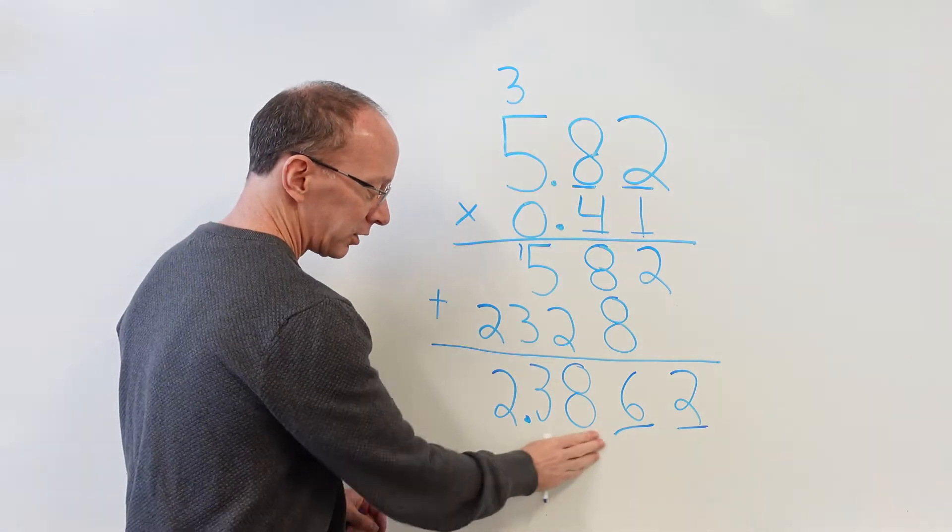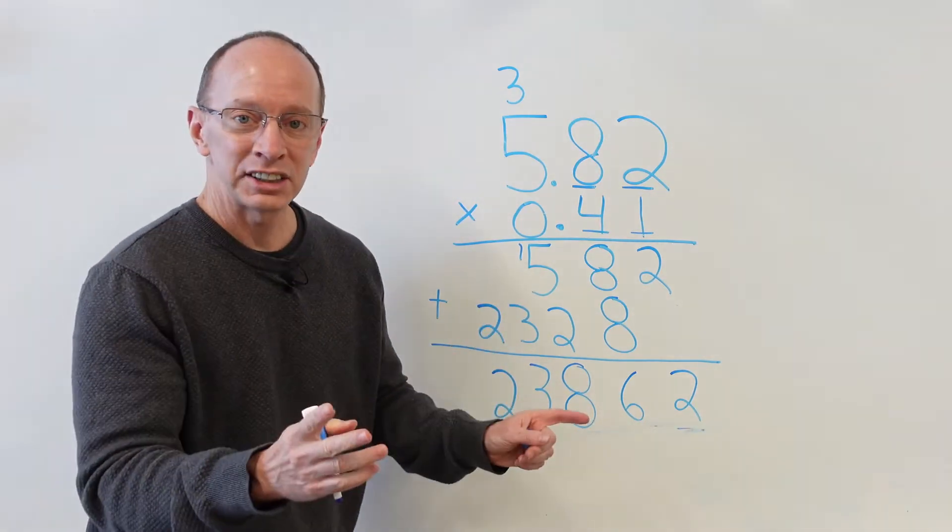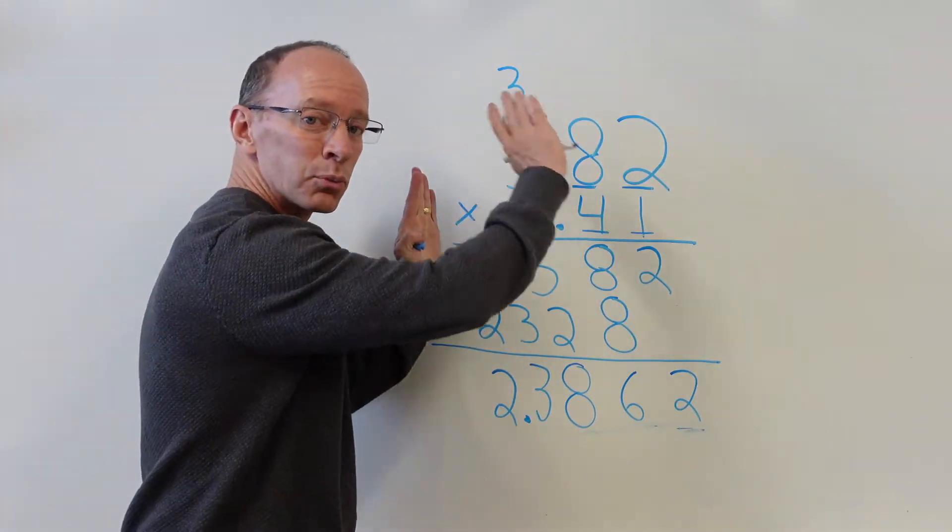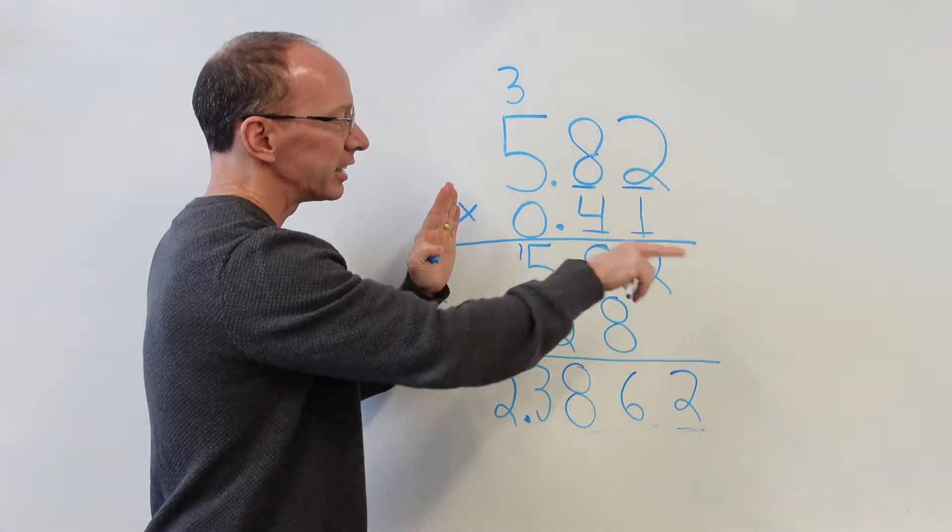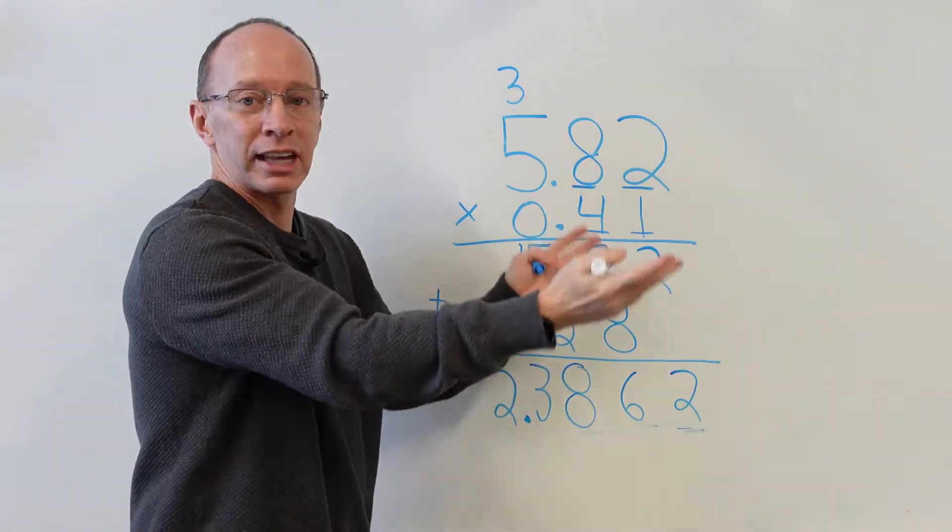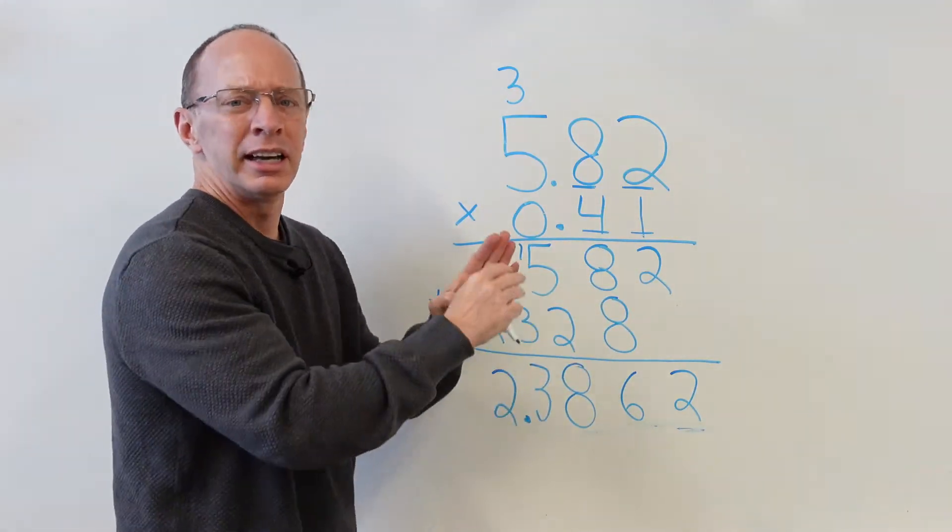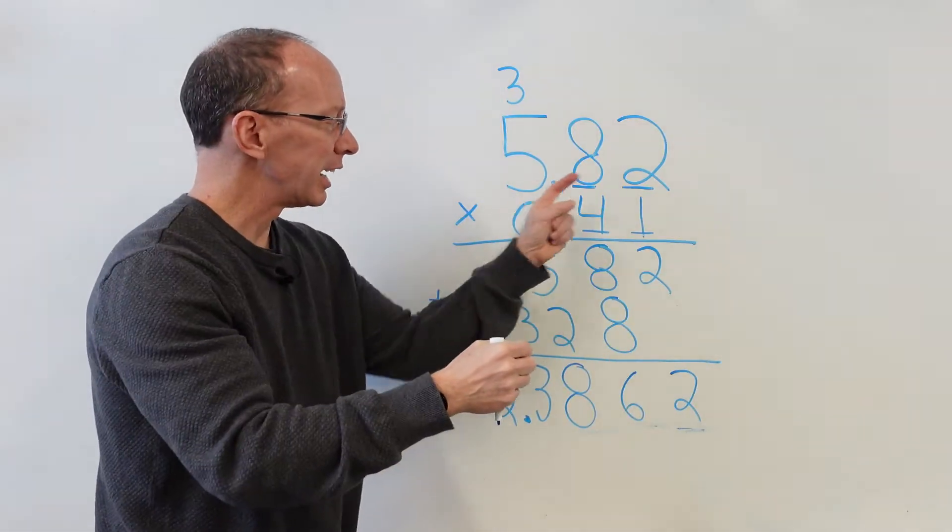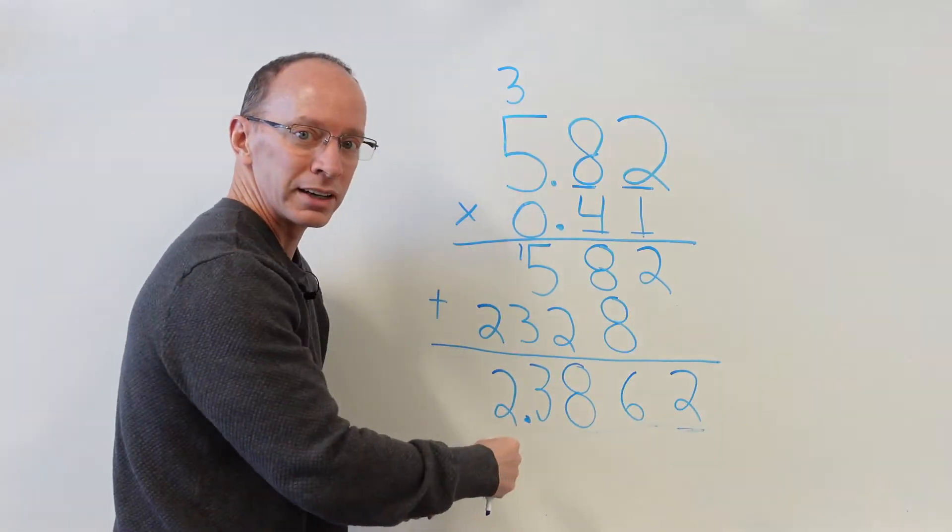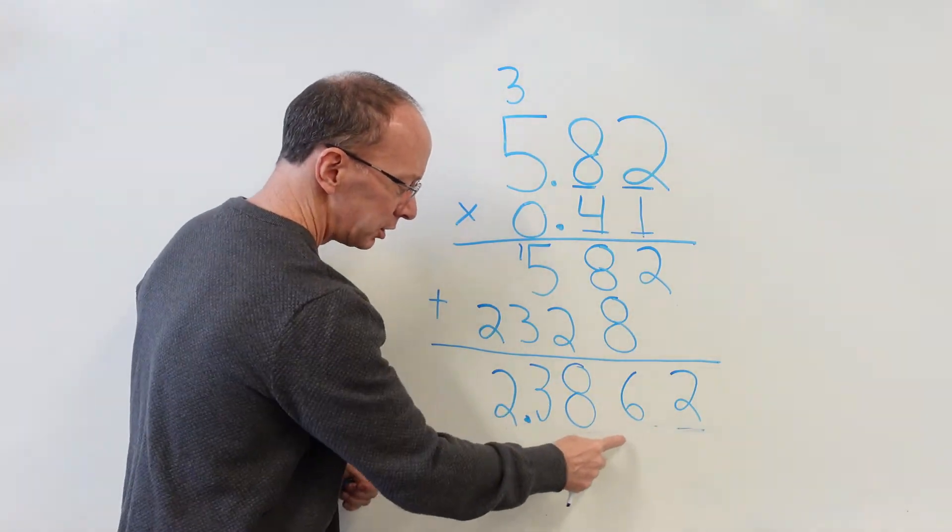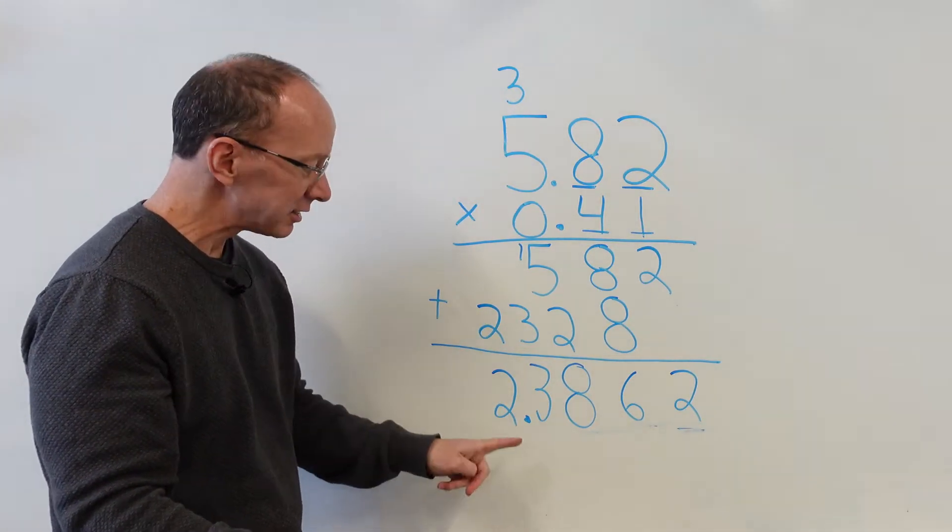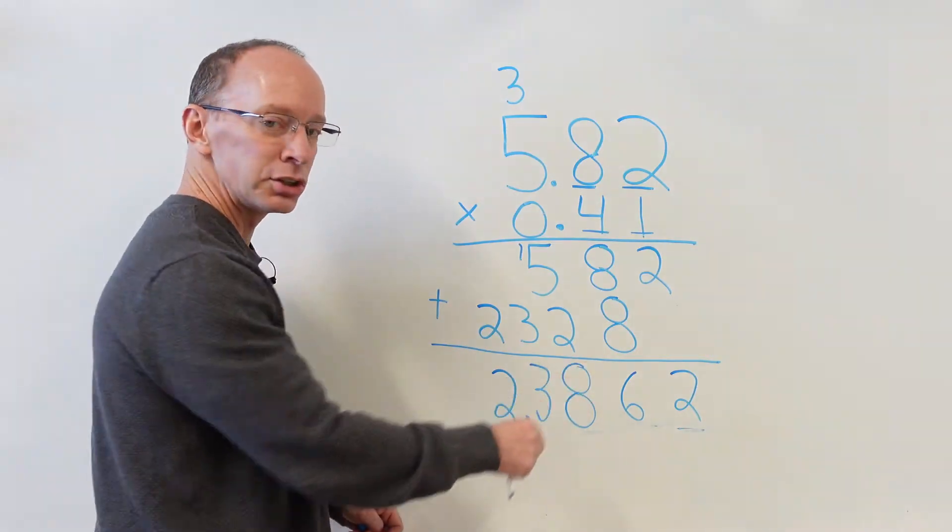So I'm going to erase these lines right here so it doesn't get too confusing. So what I just did, kind of back up, I counted the numbers on the right side of the decimal point. 1, 2, 3, 4. I add them all up. It could be like 5,000 numbers. But it could be a number of spaces behind the decimal point. You just count those up and then you start counting this way. It's kind of like a little game. So I just go 1, 2, 3, 4, boom, right there. Put that decimal point in right there. That's the answer, 2.3862. Hey, let's go do another one.